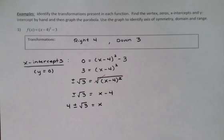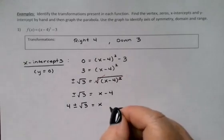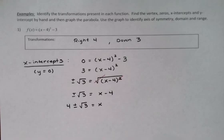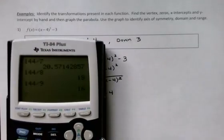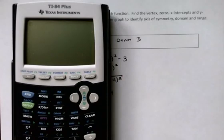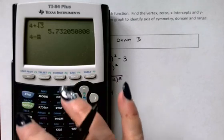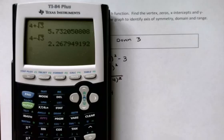So there are my x-intercepts. Well, actually those are the zeros, but when I put them into the point form, they'll be the x-intercepts. In order to graph those, it's going to be really helpful to me to have decimal approximations. If I don't do that, it's going to be really hard for me to figure out where to put those on the graph. So I'm just going to grab my calculator and do 4 + √3 and then also 4 - √3.